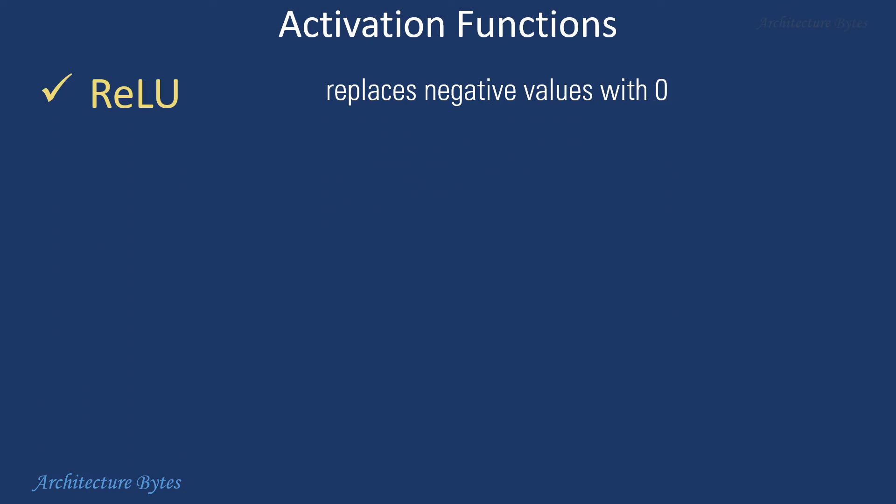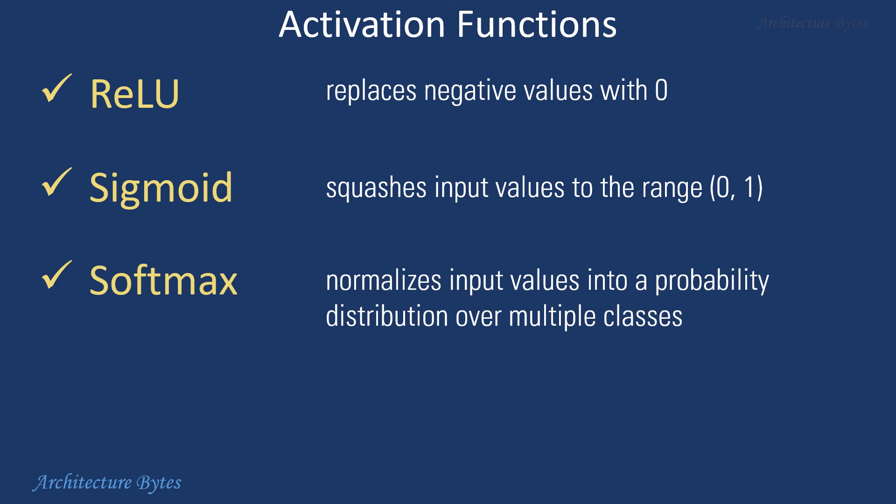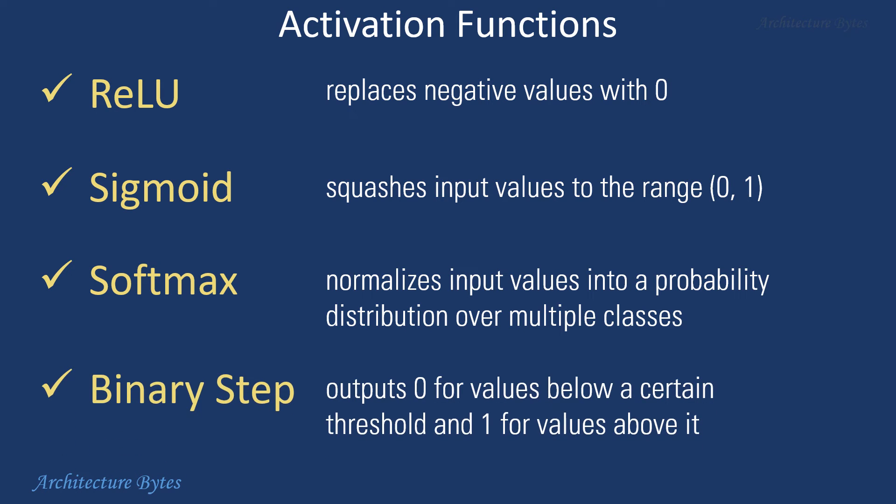There are many kinds of activation functions like ReLU, which replaces negative values with 0. Sigmoid squashes input values to the range of 0 to 1. Softmax normalizes input values into a probability distribution over multiple classes. And binary step outputs 0 for values below a certain threshold and 1 for values above it.